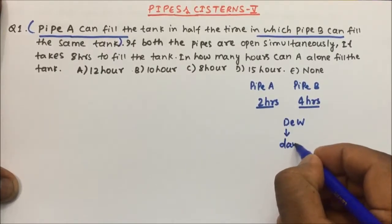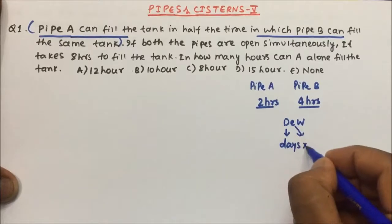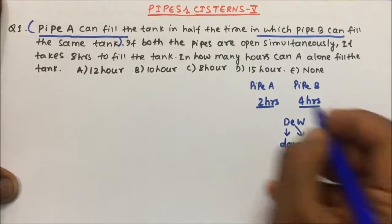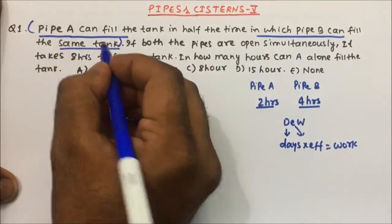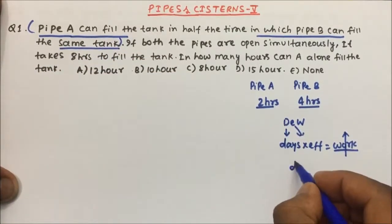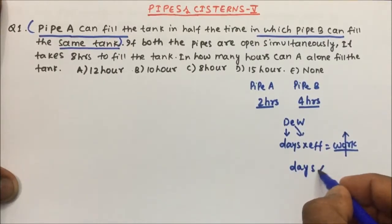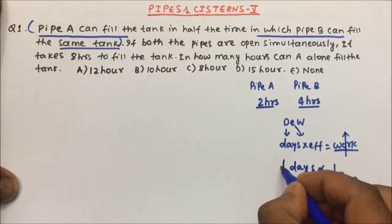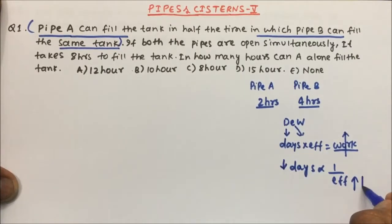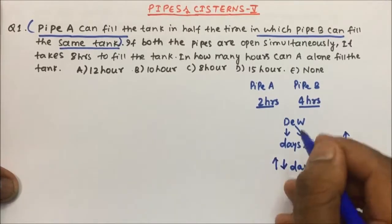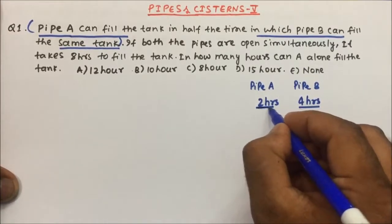One formula I have taught you earlier — the Mountain Dew formula — means days multiplied by efficiency equals work. When the work is constant or the same, then days will become inversely proportional to efficiency. If efficiency is more, you will take fewer days; if efficiency is less, you will take more days.